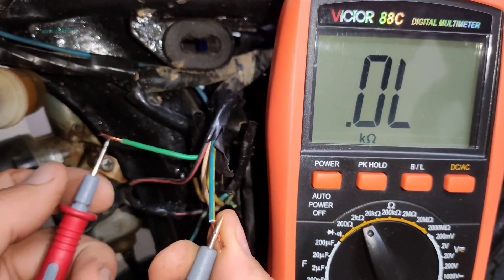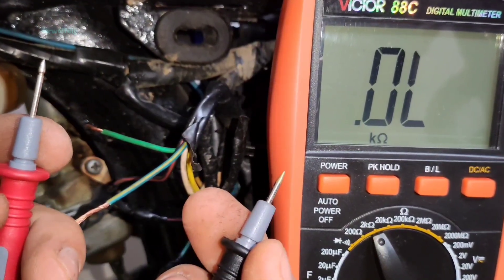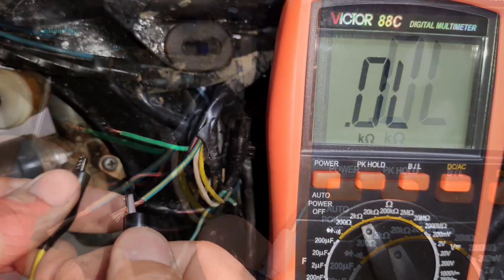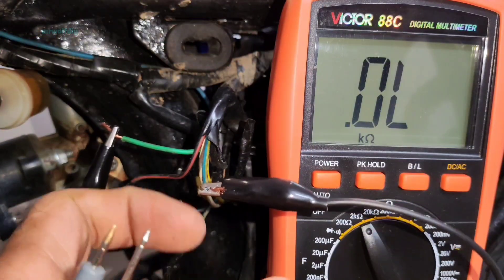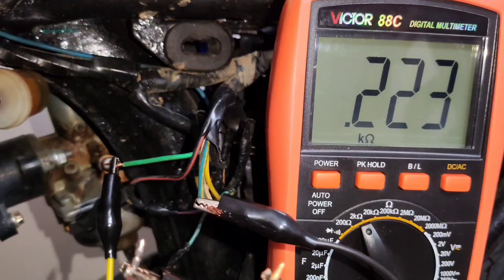Now touch the multimeter probe to the pickup wires. Some professional multimeters may also detect the resistance of your hands, so it's better to use small clips. Like this. You should see a resistance value on the screen.